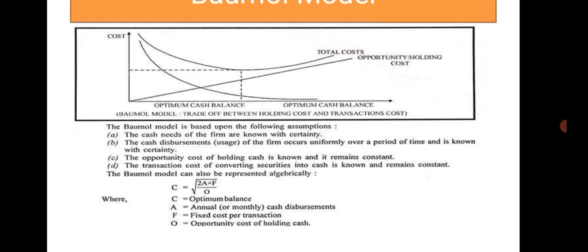The Baumol model can be represented by an algebraic formula. C is the optimum balance. We can use the annual cash disbursements, fixed cost per transaction, and opportunity cost of holding cash for finalizing the optimal cash balance.